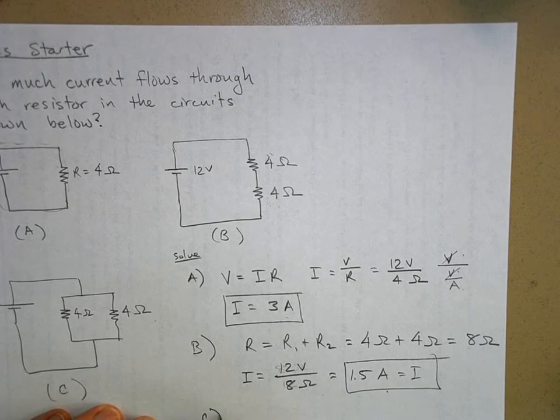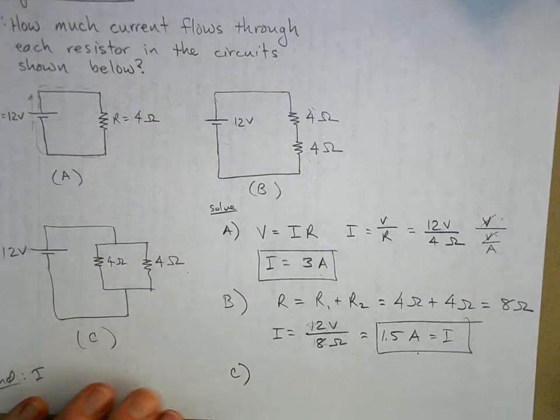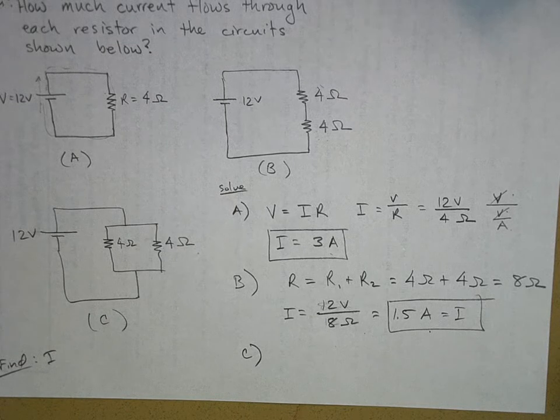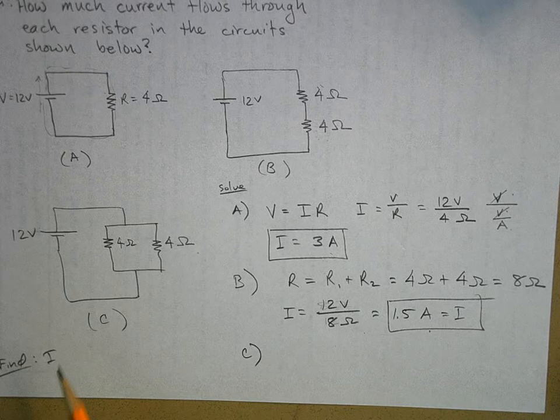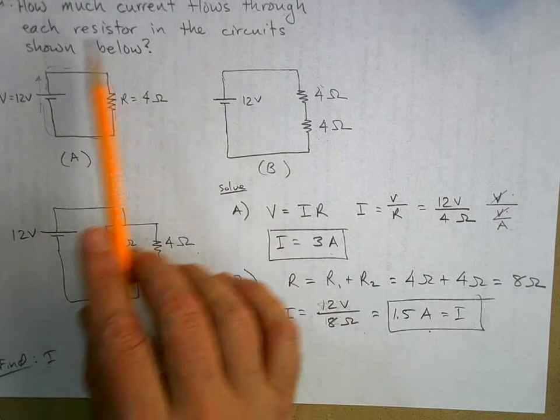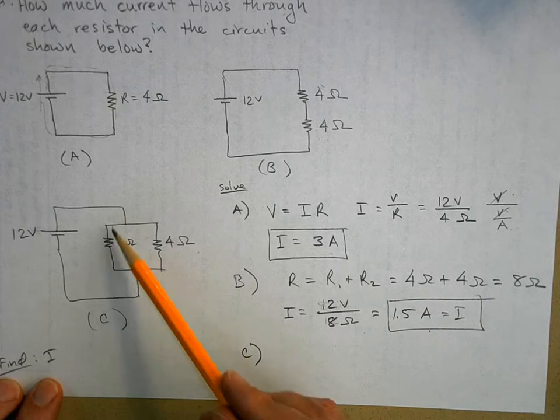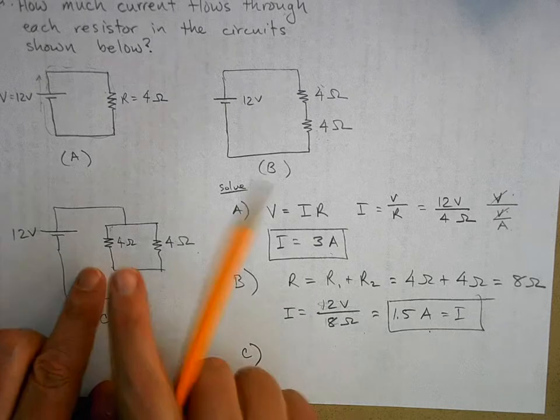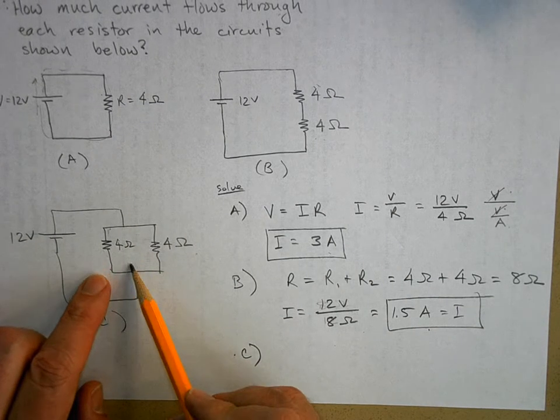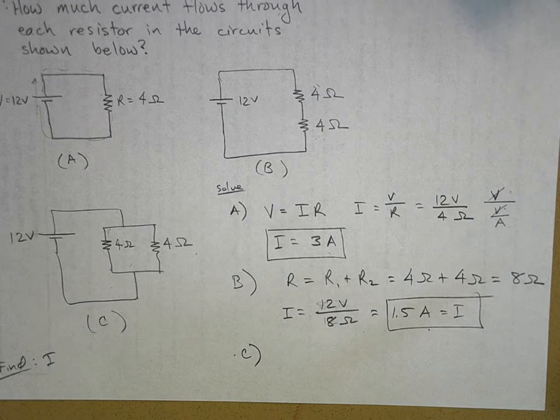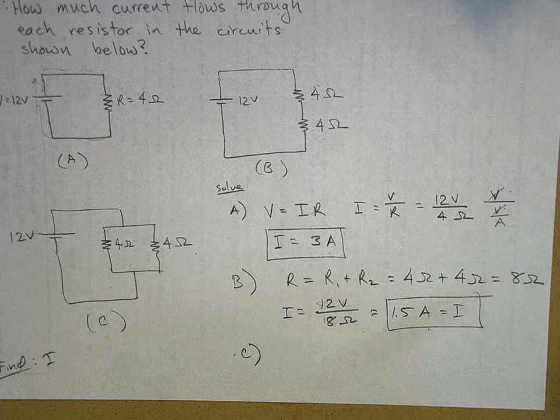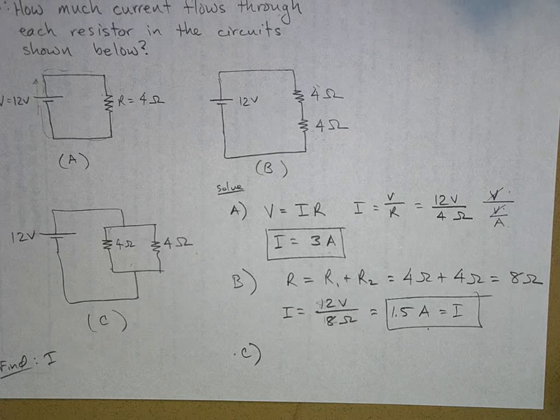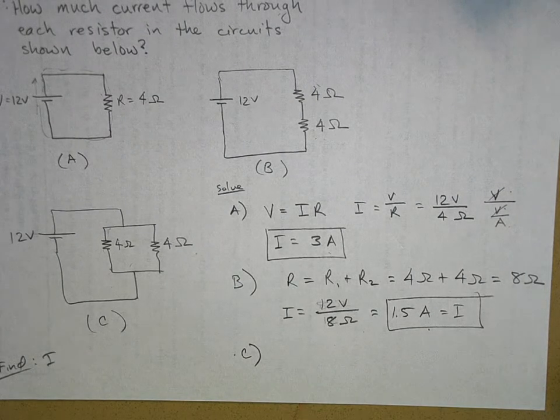Now part C is tricky. Well, not tricky, but you might have done the wrong kind of work. Because what did I ask for? I asked for the current flow through each resistor. So let's look at this resistor. This resistor is 4 ohms. How much voltage drop is there across that resistor? Now, you have two resistors in parallel. Things in parallel have the same voltage drop.